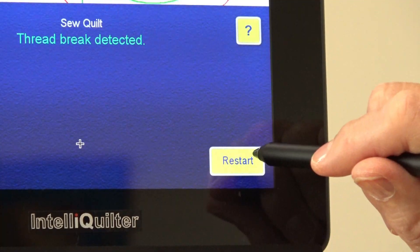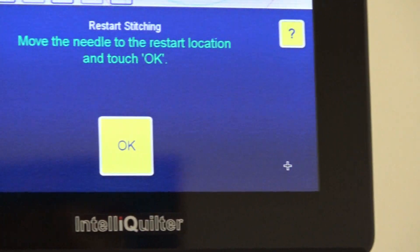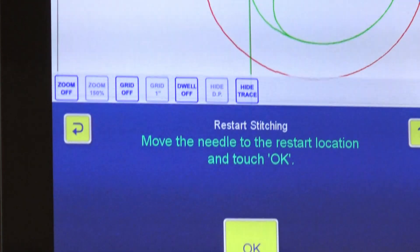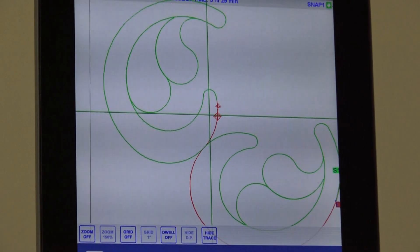With IQ's thread brake sensor to stop the machine stitching and the easy-to-use restart feature, replacing the bobbin is no problem.